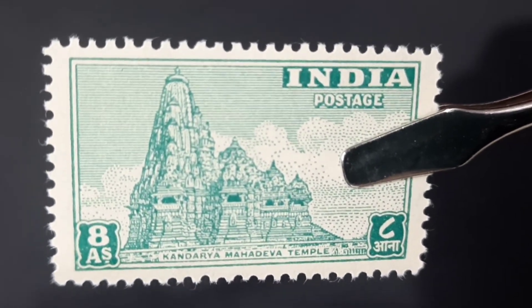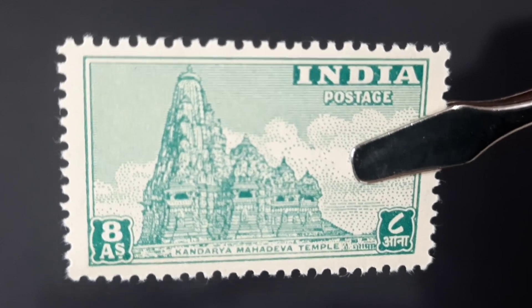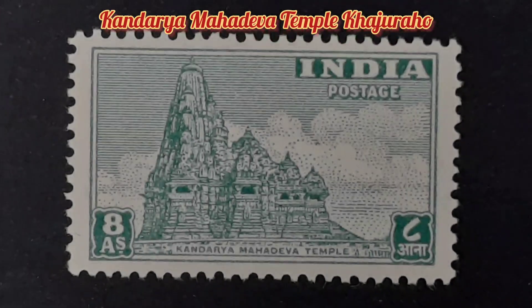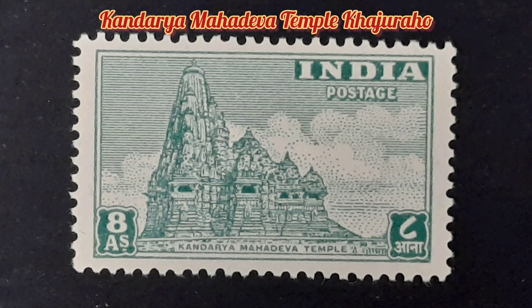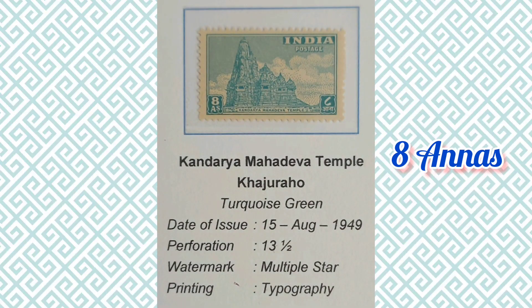The next stamp is the eight annas stamp. The image depicted here is the Kandariya Mahadeva Temple, dedicated to Lord Shiva and part of the group of temples at Khajuraho. It was built during the 11th century AD. The philatelic information of this stamp is provided here.